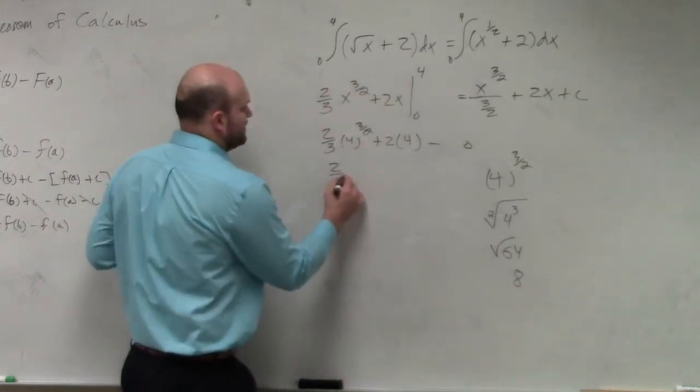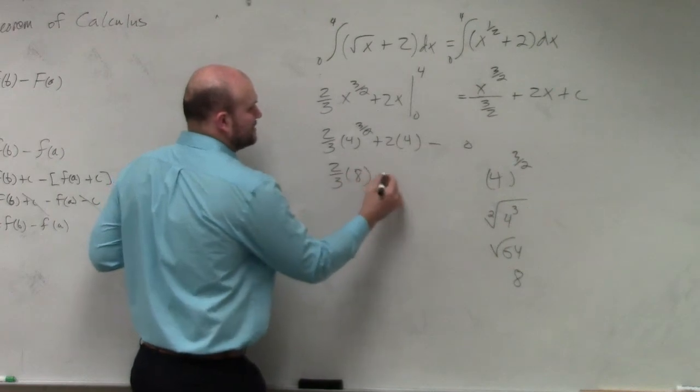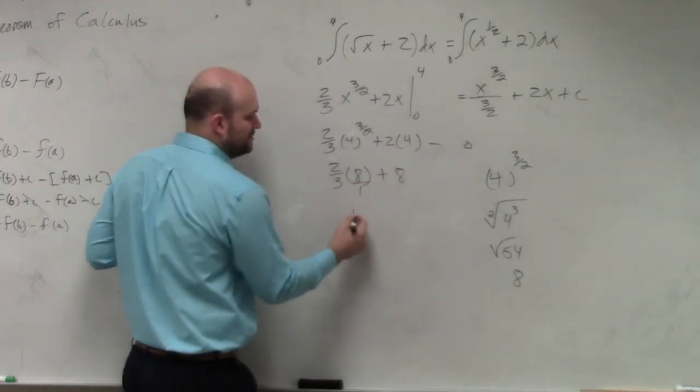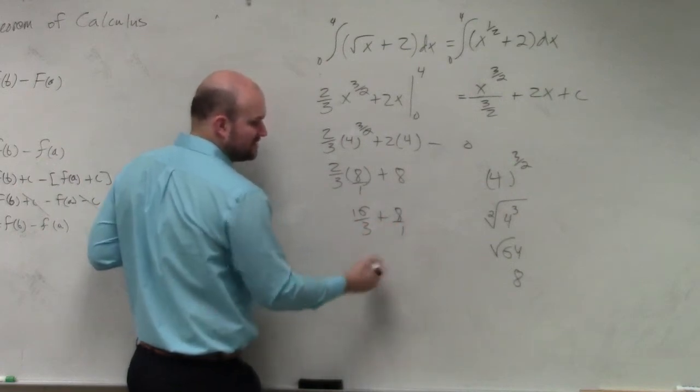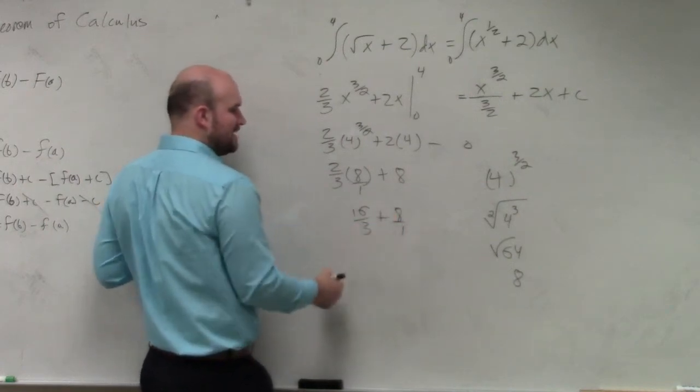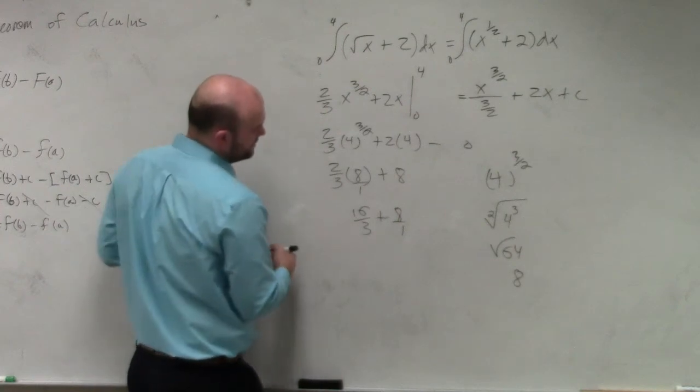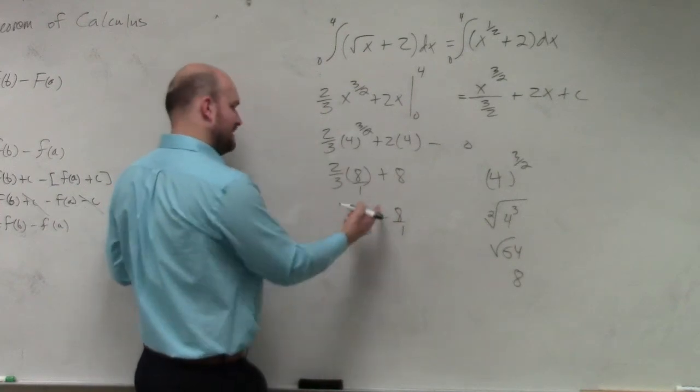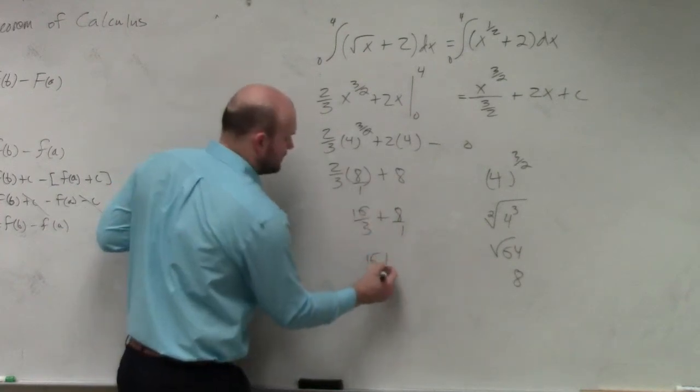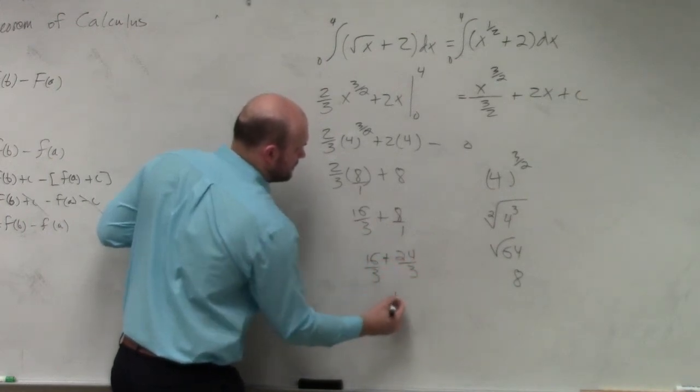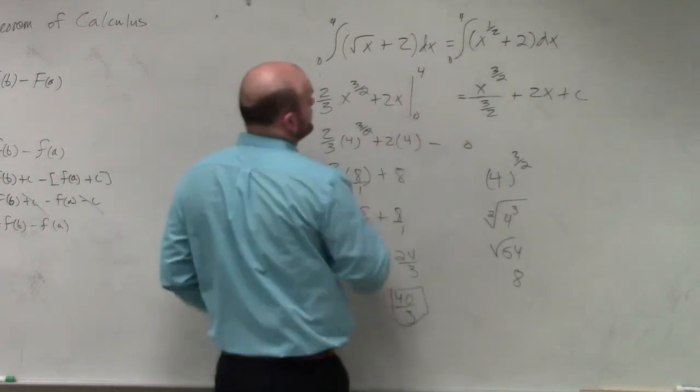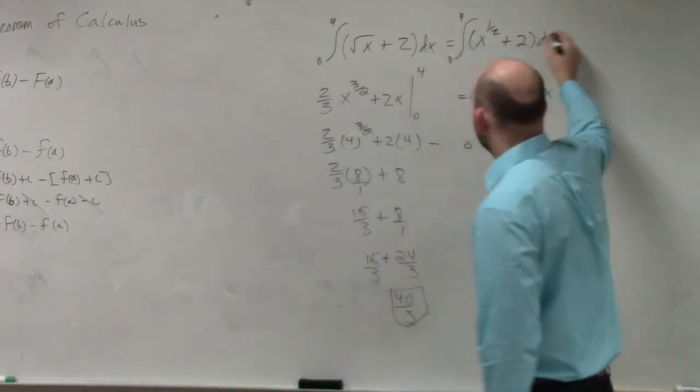So therefore, you have 2 thirds times 8 plus 8. We'll write that as a fraction. You have 16 over 3 plus 8. We write 8 as a fraction to be a power of 3. So multiply that by 3 would be 24... 30, wait, 8, 16, 24. So your final answer would equal 40 over 3.